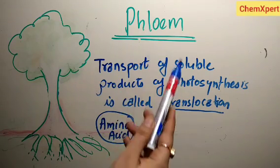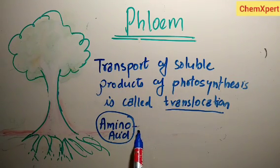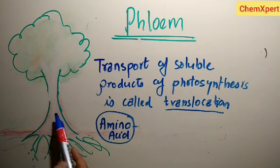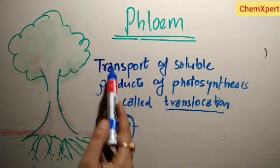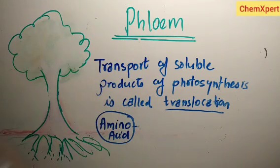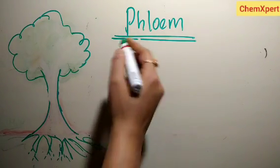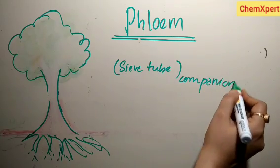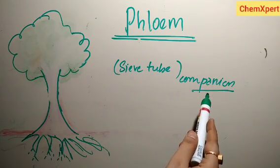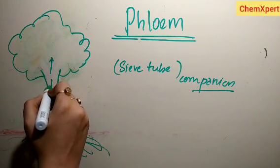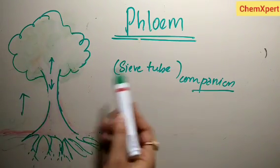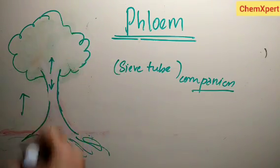Through phloem, in addition to food, amino acids are also transported to other parts such as storage organs of roots, fruits, seeds, and growing organs. Transportation takes place through sieve tubes to adjacent companion cells. Unlike water movement in xylem, which is only unidirectional — upward — translocation in phloem takes place in both directions: upward as well as downward.